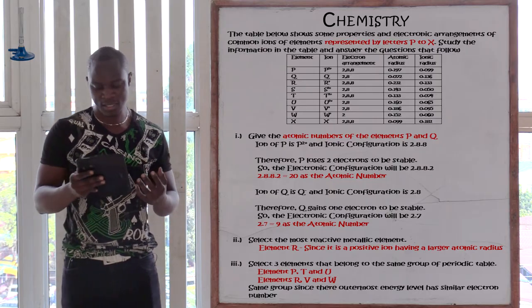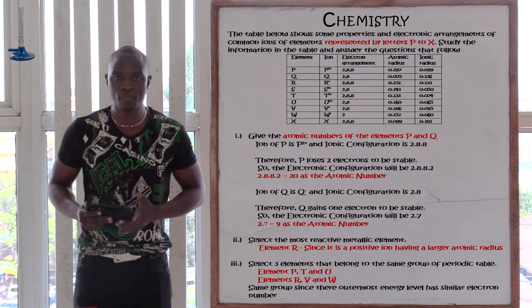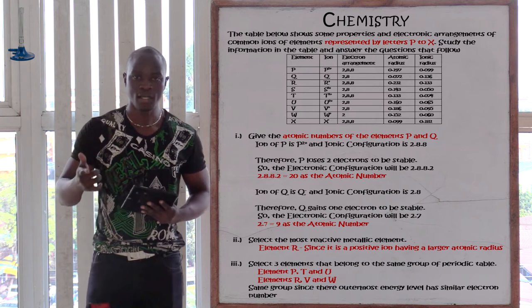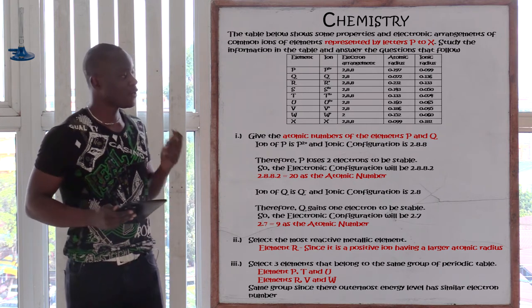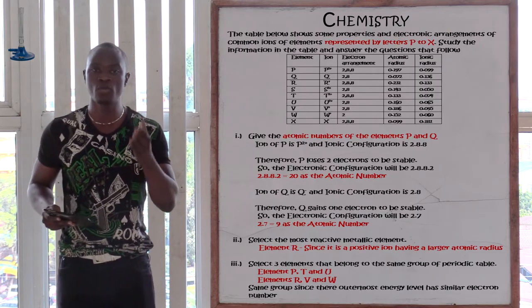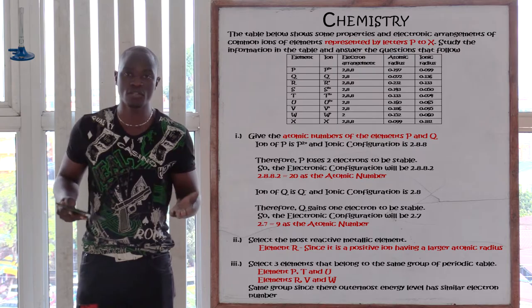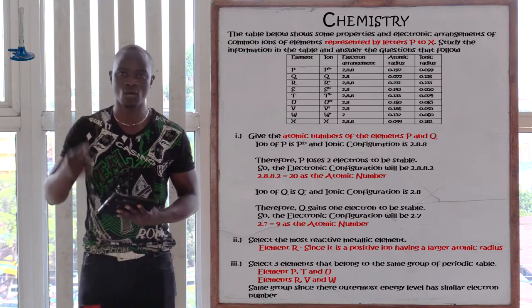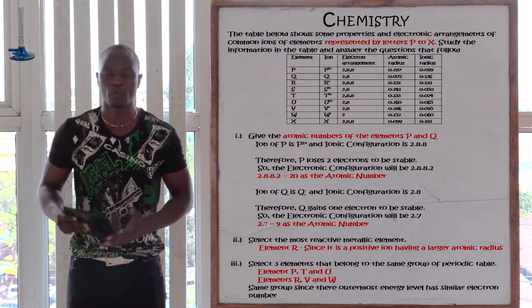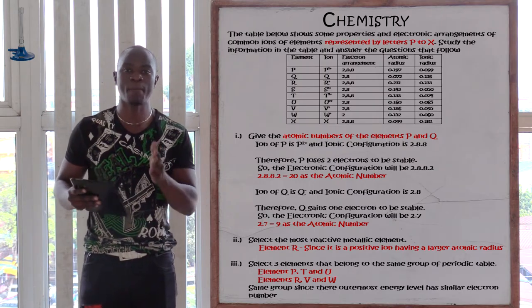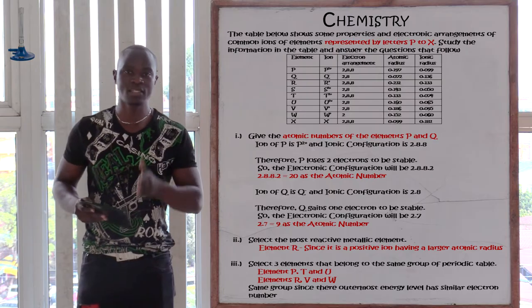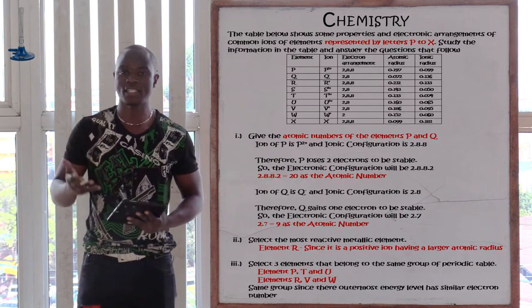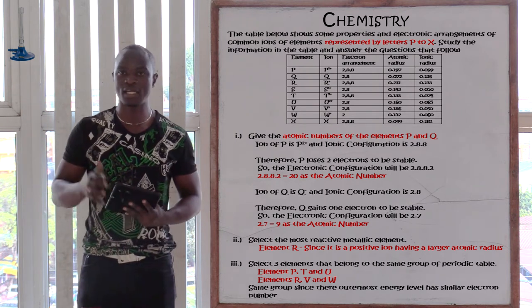Let's look at ion R, which has a positive charge, meaning it has lost one electron. The ionic arrangement is 2,8,8. Since it lost one, we add that one back to the configuration, giving 2,8,8,1. This element is potassium, which is always atomic number 19 — adding 2+8+8+1 equals 19.